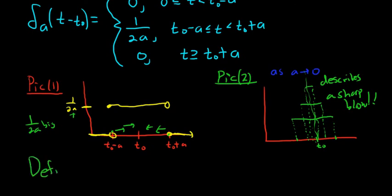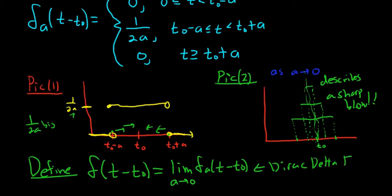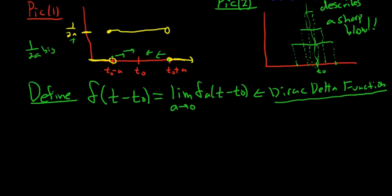So now we're going to define the Dirac delta function. Define delta of t minus t₀ — with no a — to be the limit as a approaches 0 of delta sub a. This is called the Dirac delta function. Obviously it's not really a function, but we still call it the Dirac delta function. It has two key properties.